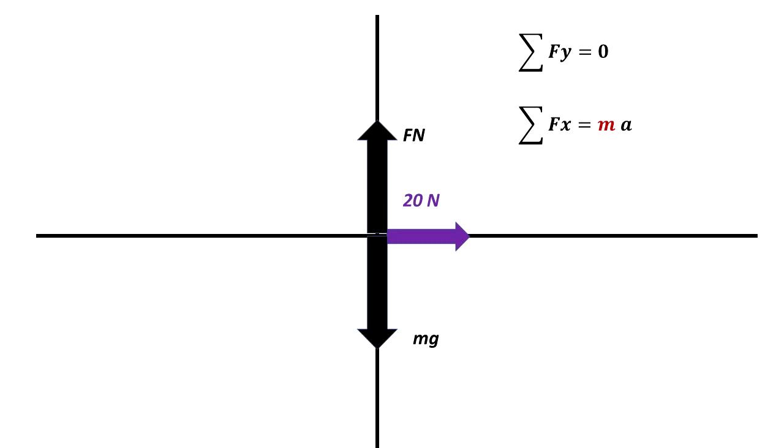In the x direction, we have 20N pushing to the right - that's the force being applied to the system. But we don't have friction, it is on a frictionless surface. That means there is no friction force. The only force applied to this system is the 20N. That's an unbalanced force, and the summation of the forces in the x is equal to mass times acceleration.